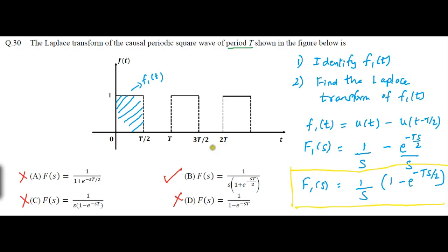This is how you find the Laplace transform of any periodic square wave. The main part is identifying F1(t) — the function between 0 and T after which it repeats. Thanks for watching. Please subscribe to our channel and share the word about our website, gateece.org. Thank you.